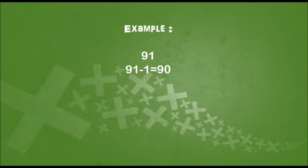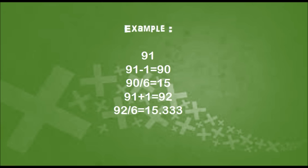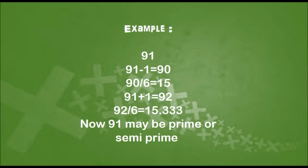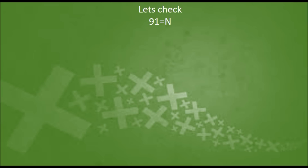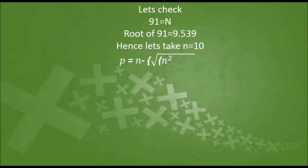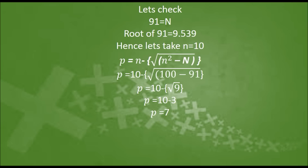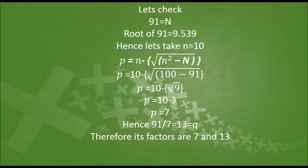Example: n equals 91. 91 minus 1 gives 90; dividing by 6 gives a whole number. Adding 1 to 91 and dividing by 6 gives a decimal number. So 91 may be a prime or a semi-prime. Let's check. The square root of 91 gives 9.539, rounded to 10. Substituting in the formula, we find p equals 7, hence q equals 13. Therefore the factors are 7 and 13, and 7 times 13 equals 91. So 91 is a semi-prime number.